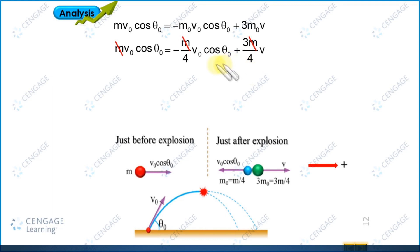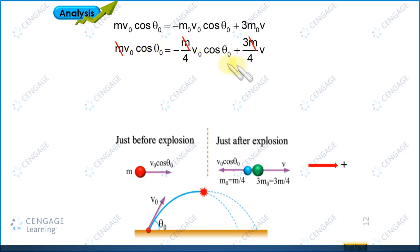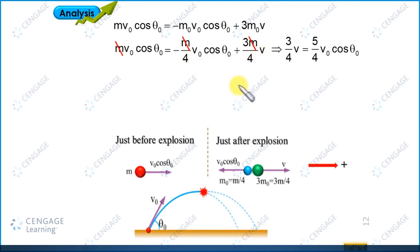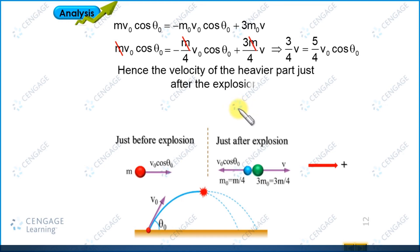Now we can find the value of v. This gives 3 by 4 times v equals 1 by 4 times v naught cos theta naught plus v naught cos theta naught, which simplifies to 3 by 4 v equals 5 by 4 v naught cos theta naught. Therefore, the velocity of the heavier particle just after the explosion is v equals 5 by 3 v naught cos theta naught. This is the required value.